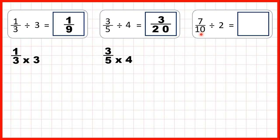Now we have 7 tenths divided by 2. We write out the fraction and multiply the denominator by 2. That gives us 7 twentieths as our answer.